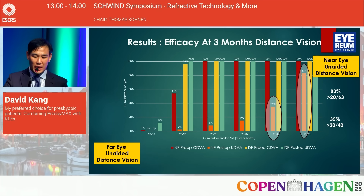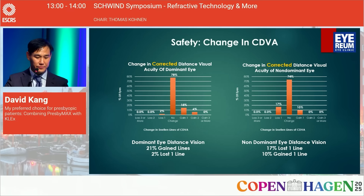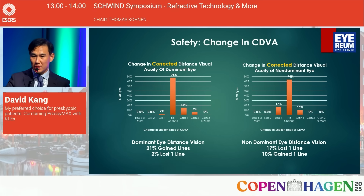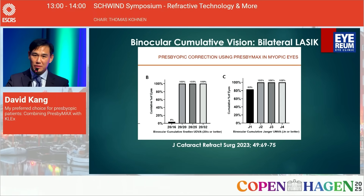For the distance eye, 100 percent saw better than 20/20 and 12 percent better than 20/16. However, this is monocular data, and Presbymax is actually a functional bilateral procedure. For safety — monocular dominant eye corrected distance vision: 21 percent gained lines, 2 percent lost one line. Non-dominant near eye corrected distance vision: 17 percent of eyes lost a line monocularly. But what is important is binocular vision, and this is published data from 2023.